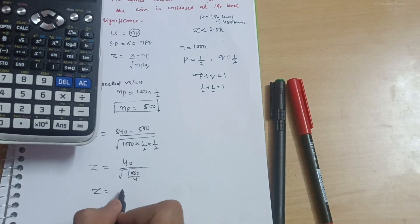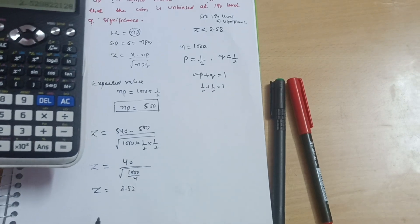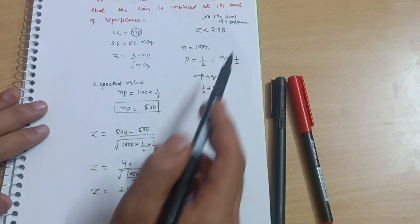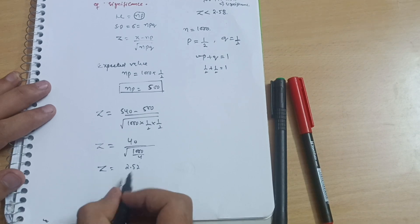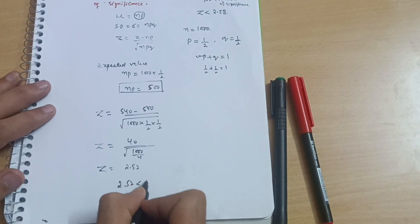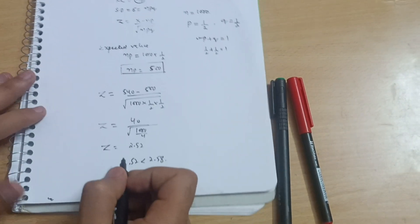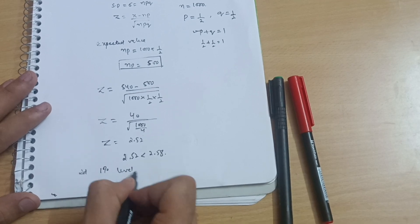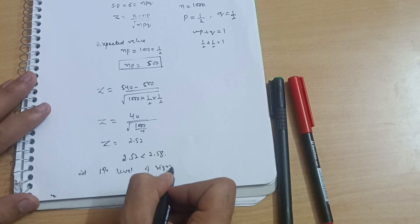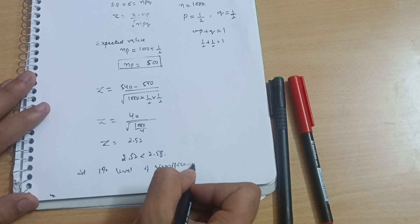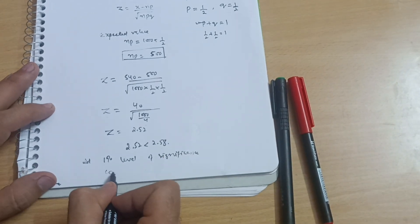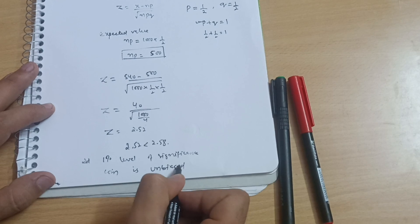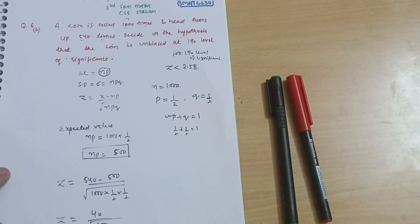Now compare it with this value less than 2.58. Yes, obviously 2.52 is less than 2.58. So I can say that at one percent level of significance, the coin is unbiased. This is the solution for this particular question. Hope it is clear to you.